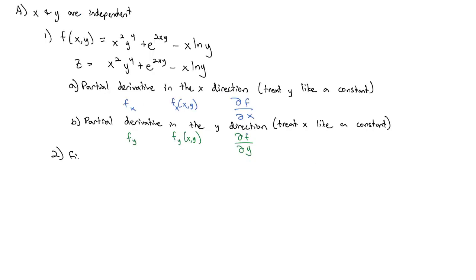Let's find fx and fy, the two partials of this function we've been talking about. f(x,y) equals x squared y to the fourth plus e to the 2xy minus x natural log of y. If we're looking for how fast the function is changing in the x direction, the partial with respect to x, we're going to treat all the y's as if they were a constant.